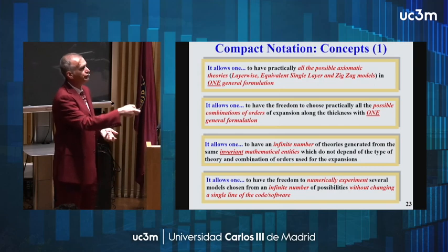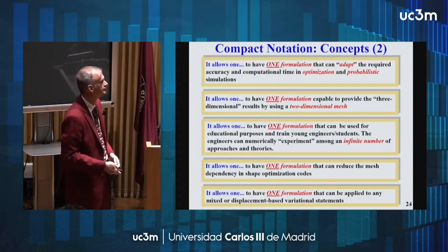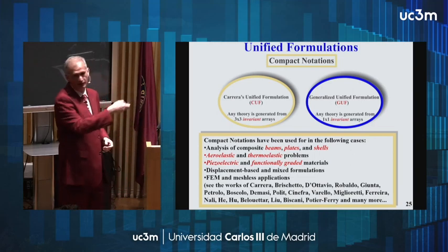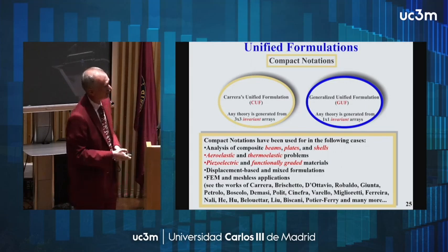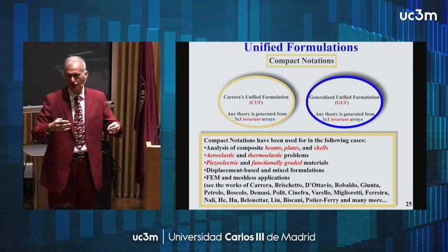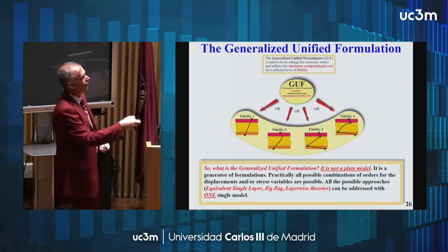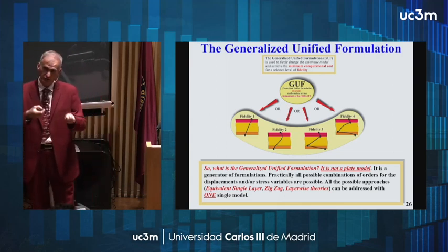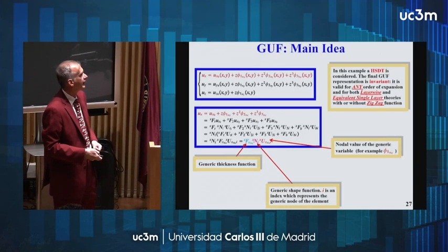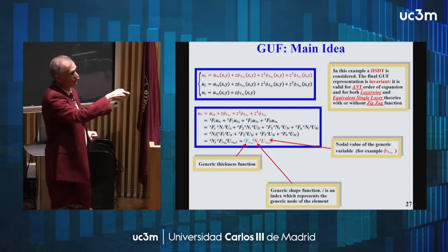It's also good for numerical experiments: do we need more terms in the x, y, or z direction to capture what we want? So one formulation should capture all these things. There was proposed in the past the Carrera Unified Formulation and also the Generalized Unified Formulation. The idea is that you have a tree of invariant mathematical entities, which by expansion of indices generate the matrices that go into the finite element solver to analyze the structure.